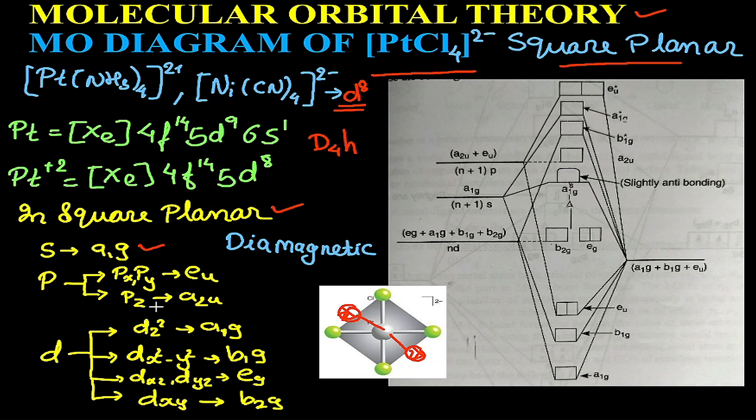Further, d orbitals: we have five orbitals so they further split. The energy of dz² reduces and as a result the orbital will be designated as a1g.